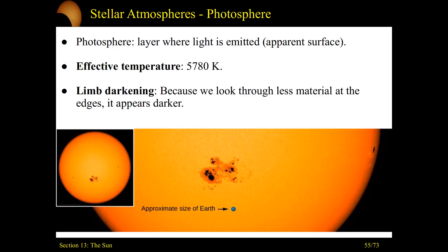Breaking down these individual layers, starting with the photosphere: this is where the light is finally coming out — the layer that the light we see from the Sun is radiating from. It's around a temperature of about 5,780 Kelvin. We would say this is roughly the surface of the Sun that we see.